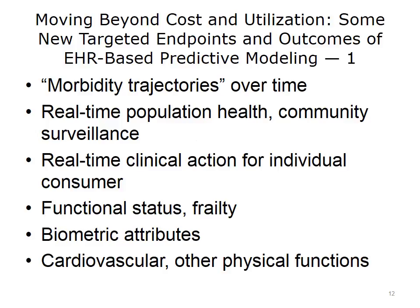Here's a summary of some of the new endpoints or targets. These new models may predict the trajectory of disease over time — for example, when is it likely to get worse or better. They might predict the health of a community, following more of the public health model of surveillance. The model might target functional status — for elders, it's particularly important not to just look at disease, but also function. There could be people with significant disease who are high-functioning, and people with lower levels of disease who are low-functioning. It's also important to understand biometric attributes such as blood pressure or blood sugar.